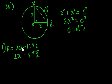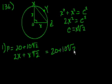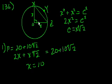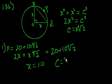Statement 1 told us that perimeter equals 20 + 10√2. Matching terms, 2x + x√2 = 20 + 10√2, so x = 10. That gives us the radius. The circumference is 2π times the radius, and the radius is 10, so the circumference equals 20π. Statement 1 is sufficient.